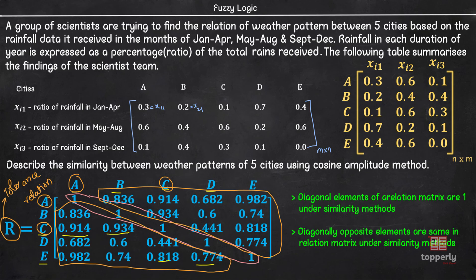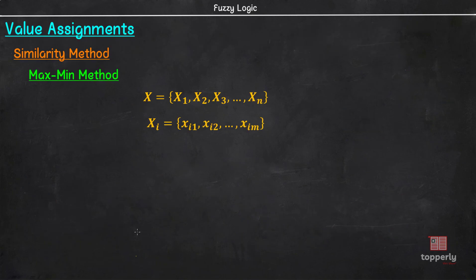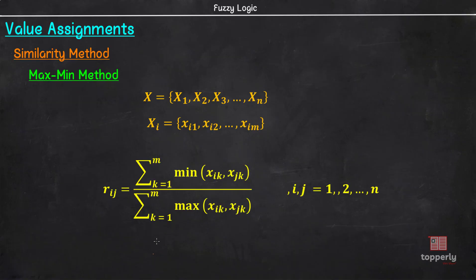Next, let us learn about the max-min similarity method. Now, please don't confuse this with the max-min method we learned in composition. That is a totally different concept. So, in the max-min similarity method, Rij is given by sigma k equal to 1 to m minimum of (xik, xjk) divided by sigma k equal to 1 to m maximum of (xik, xjk) where i and j varies from 1 to n.